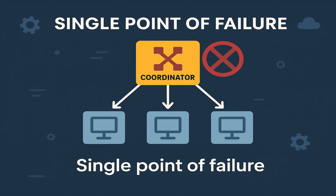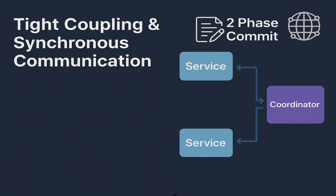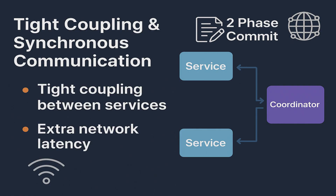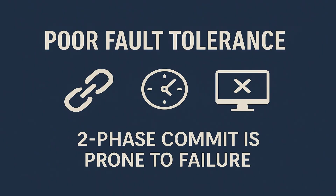Another issue is a single point of failure. The coordinator becomes a single point of failure — if it crashes between the prepare and commit phases, all other services are left not knowing what to do next. Two-phase commit also requires synchronous coordination between services and the coordinator, creating tight coupling and extra network latency. Additionally, it is not designed for failure-prone environments — a single network glitch, timeout, or crash can block the entire transaction.